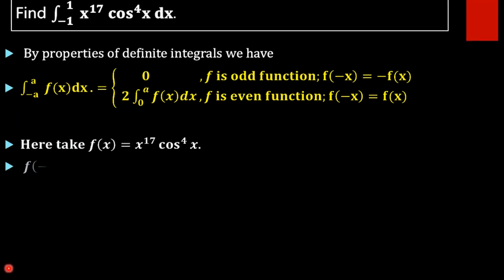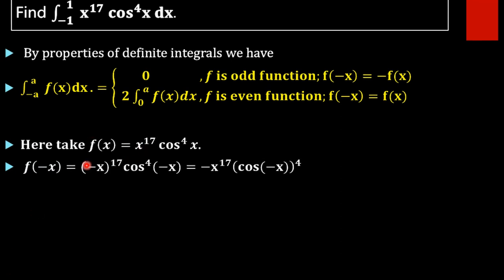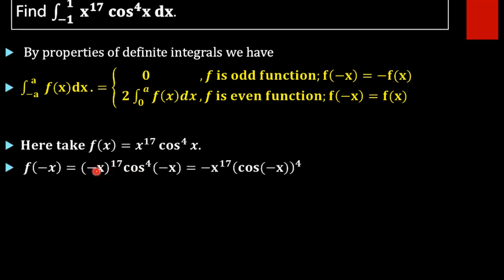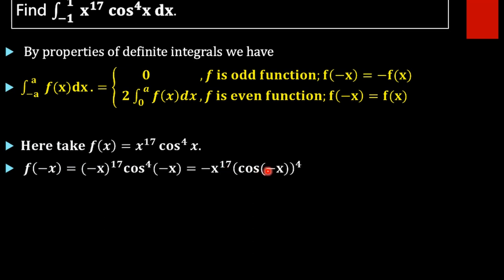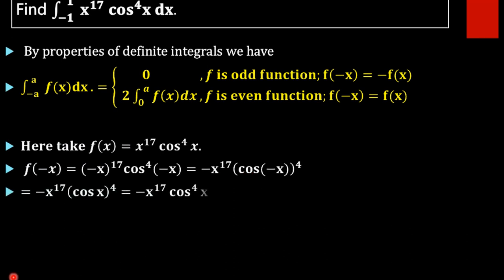Now f(minus x) equals minus x whole raised to 17 into cos raised to 4 of minus x. That is minus x raised to 17 times cos raised to 4 of minus x, which can be rewritten as cos of minus x whole raised to 4. And cos of minus x equals cos x itself.